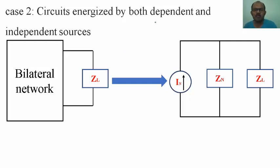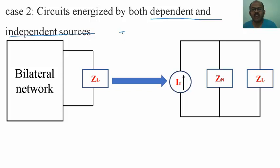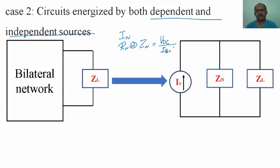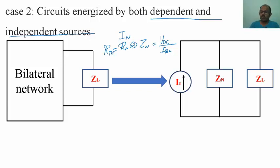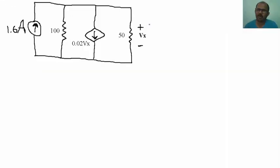Now let us solve Case 2, where both dependent and independent sources are present. When dependent sources are present, Norton's current is still the short circuit current, but Norton's impedance ZN is given by the open circuit voltage VOC divided by the short circuit current ISC. You must find both Norton's current and Norton's impedance, then connect the load impedance ZL.